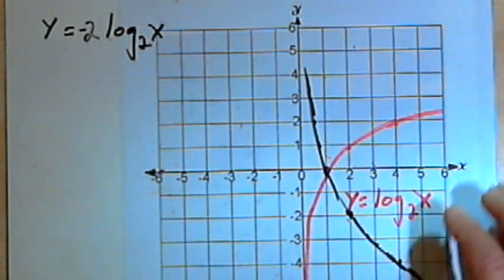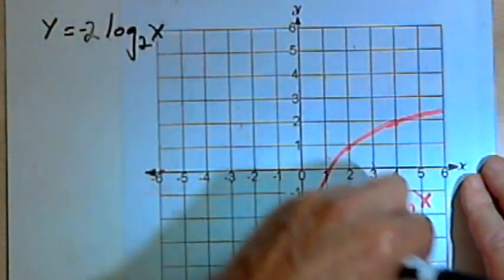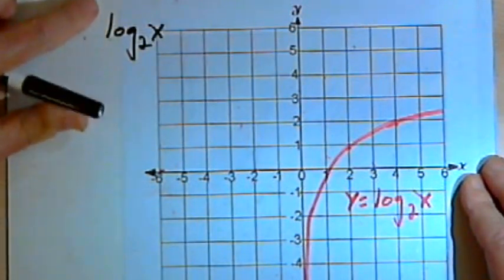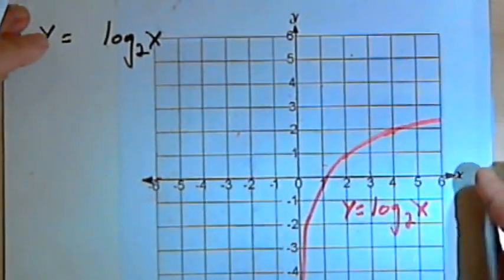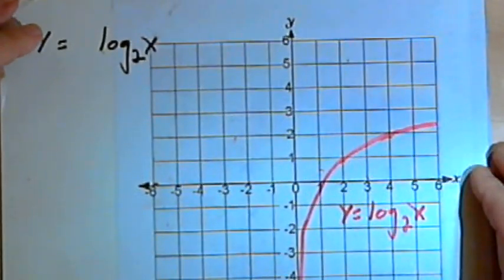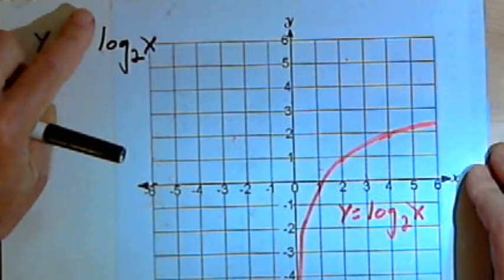Okay? Now, besides transforming the graph vertically with reflections and shifts and stretches, we can also move the graph horizontally.